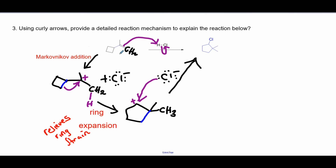What if you're asked to draw the mechanism showing how this four-membered ring reacted with HCl to form a five-membered ring? This involves a different kind of carbocation intermediate. The molecule moves from a four-membered ring to a five-membered ring because it wants to relieve ring strain — small rings are strained and want to expand to become more comfortable.